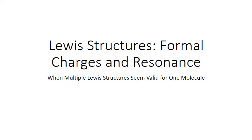Most of the time, when you follow the step-by-step process for drawing Lewis structures, you find one correct bonding structure for a molecule. Occasionally, though, you might find yourself with two or three possible structural arrangements that you need to choose between. In these cases, a calculation of formal charges is one way to help distinguish the most likely structure. And if that calculation turns up two or more equivalent structural possibilities, then it's likely that you have a molecule that exhibits resonance.